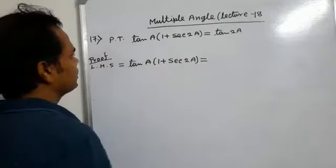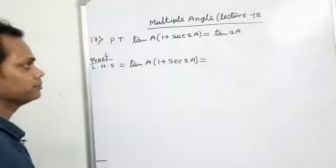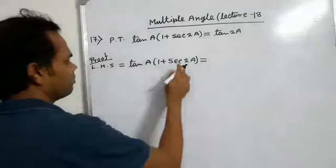Prove that tan A times 1 plus sec 2A equals tan 2A. From the LHS part, tan A times 1 plus sec 2A.